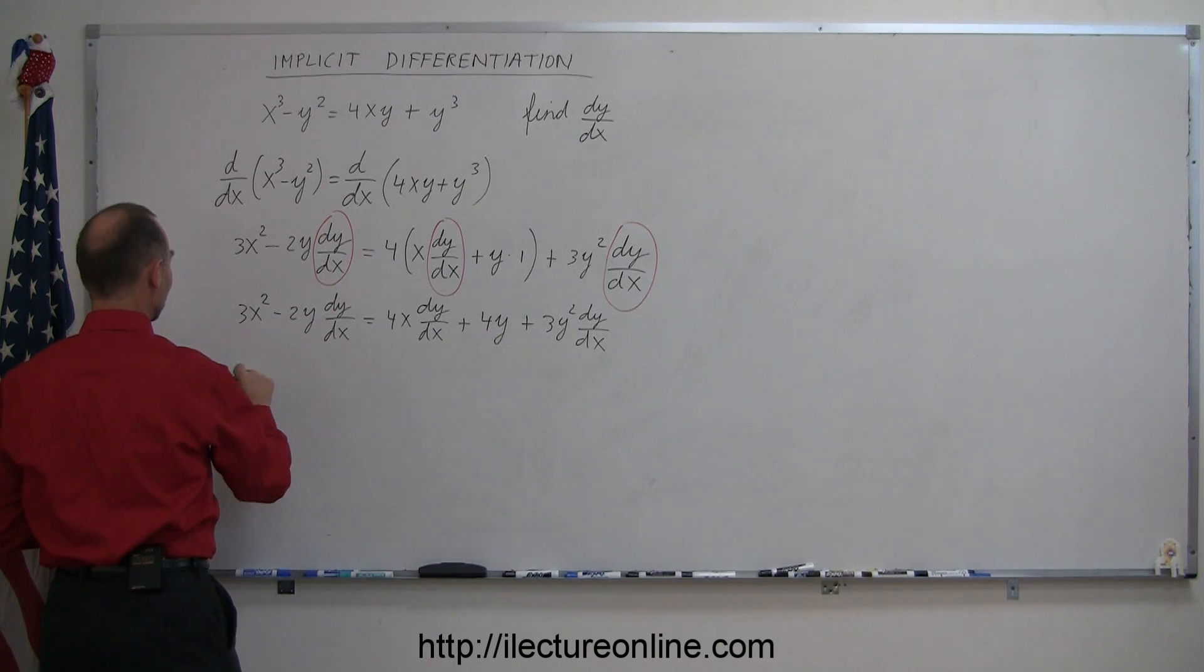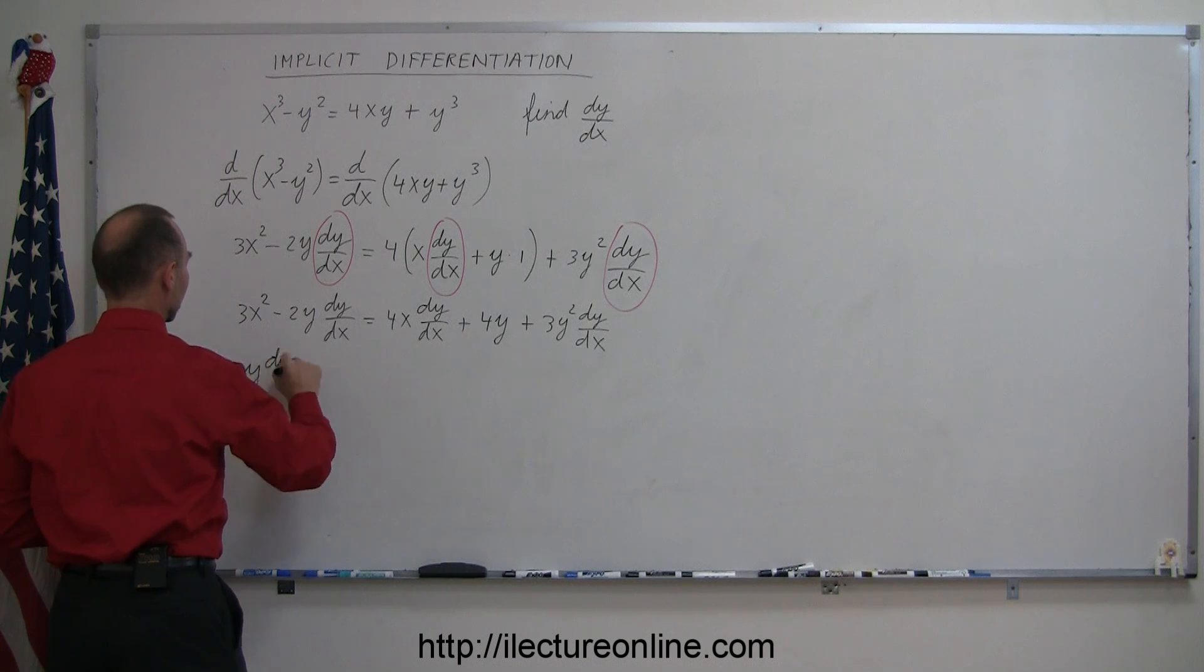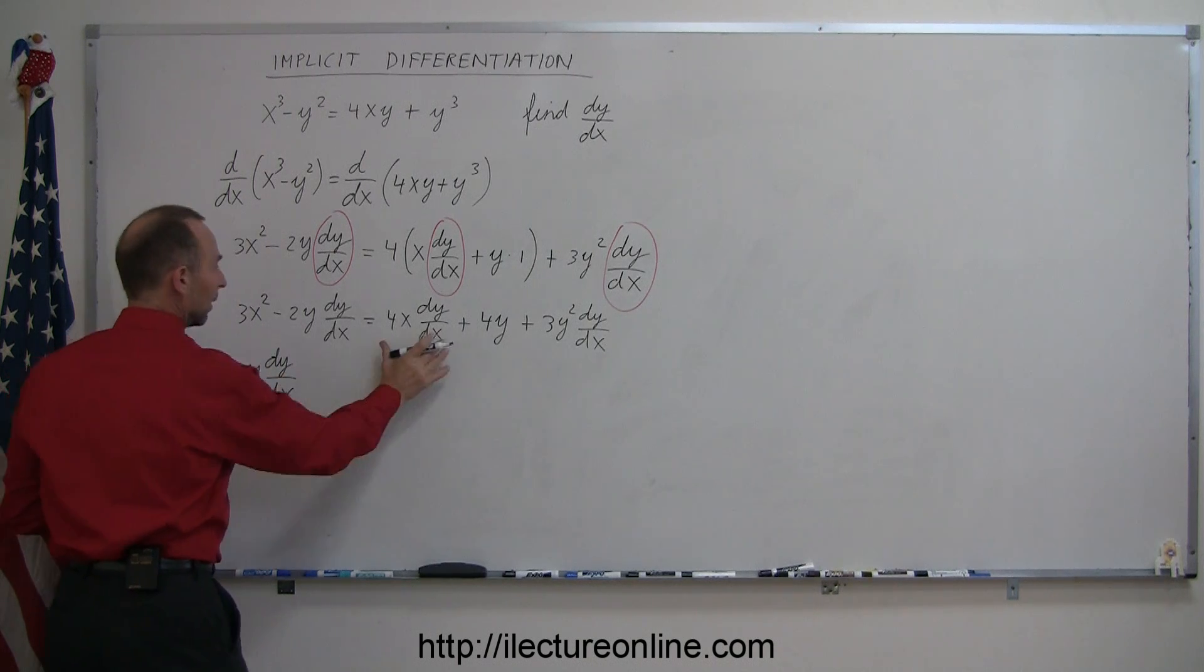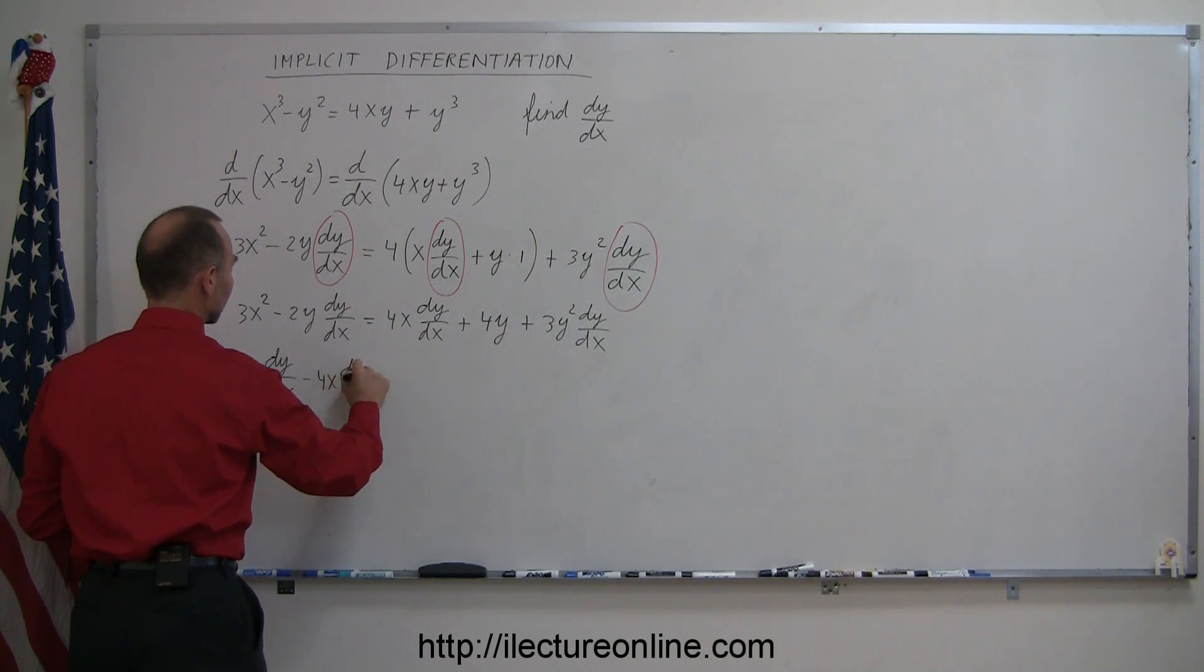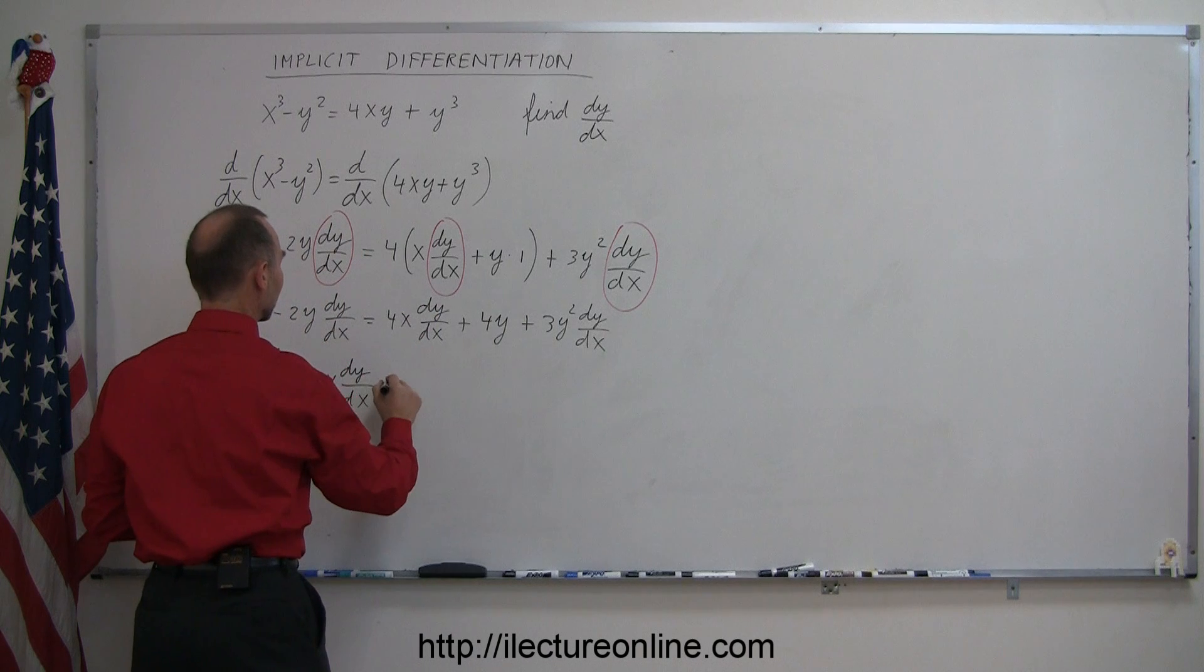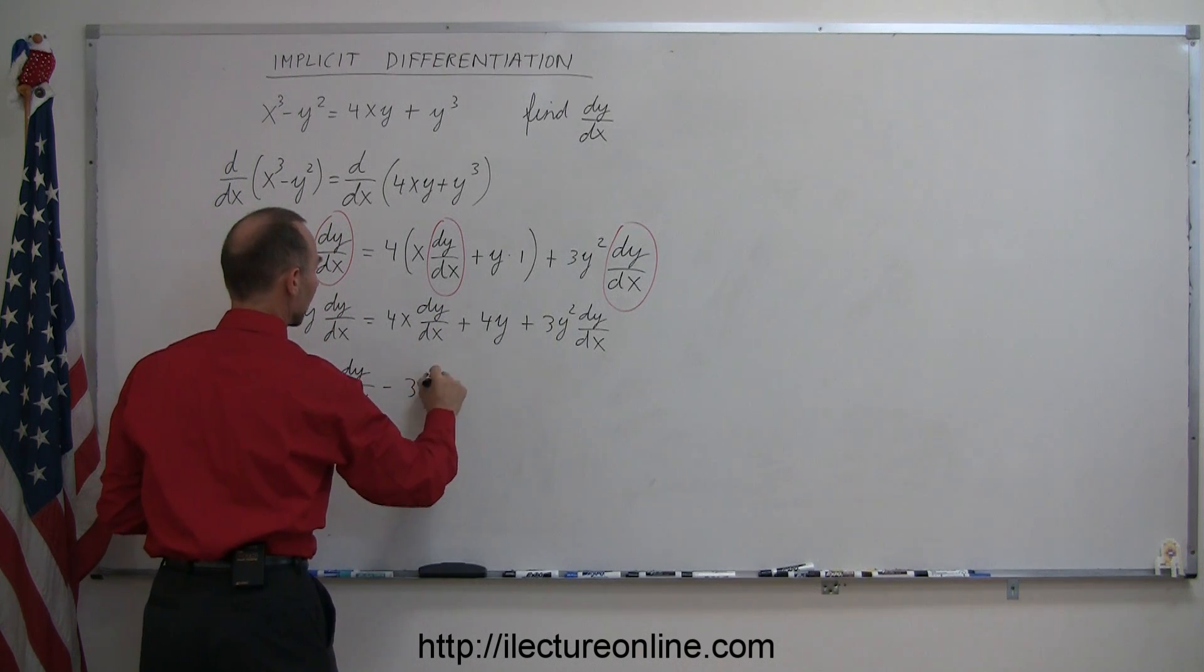So isolating this we have 2y dy/dx, and we take this term to the left side, so it becomes minus 4x dy/dx, and then we take this term to the left side, so this becomes minus 3y² dy/dx.